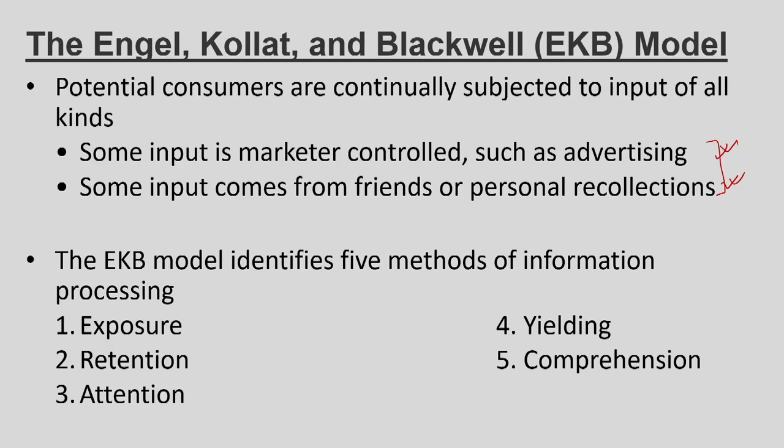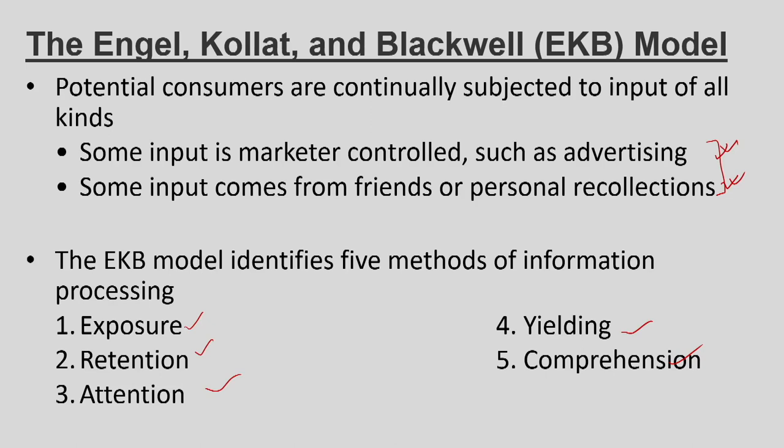The EKB model identifies five information processing systems: exposure, attention, retention, yielding, and comprehension. First you are exposed to the information and see it for the first time. Second, you pay attention to the particular information. Third, you comprehend and understand what is being said, retain it in memory. Finally, at the time of need when you go to buy a product, you remember that this product is out there and go ahead and buy it.